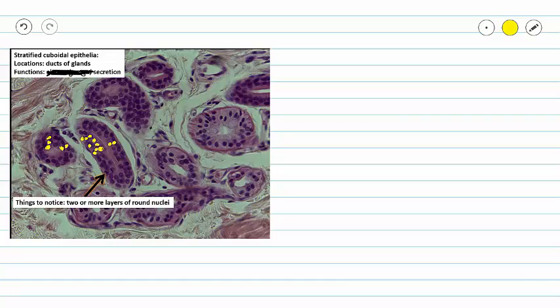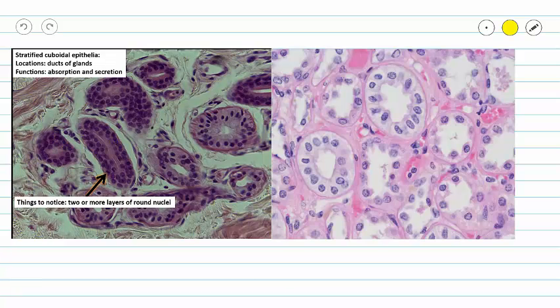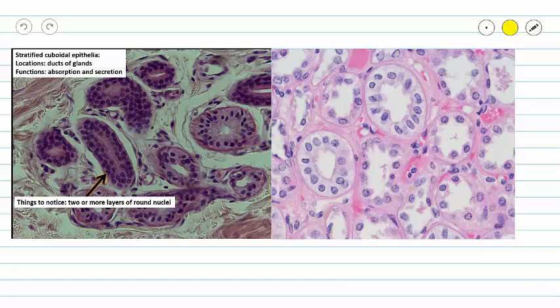So let's just take a moment and compare our stratified cuboidal epithelium with our simple cuboidal epithelium so that we can see them side by side. Here we go. On the left is that same stratified cuboidal epithelium where we have multiple layers of cells in all of our ducts.